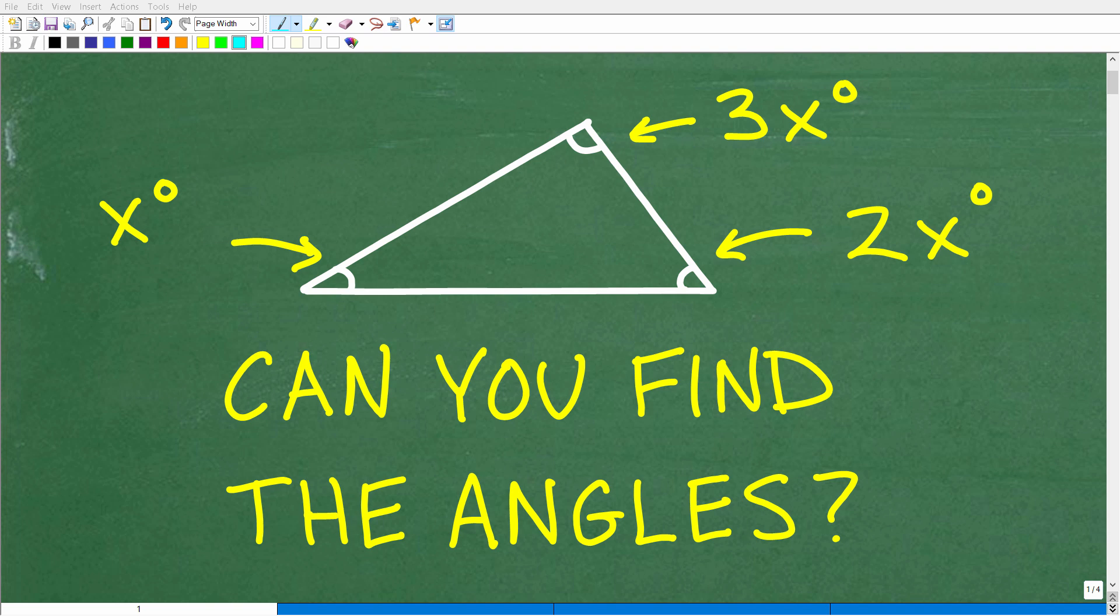In a couple minutes, you'll be an expert. But here is the question: we want to find the angles of this triangle. This angle in the triangle is x degrees, this angle right here is 2x degrees, and this angle right here is 3x degrees. What are the actual angles?